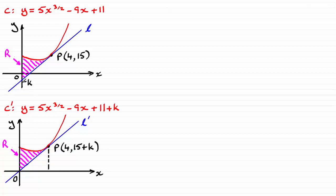To work out what k is I need to establish the equation of the line L — that tangent at P. So I'm going to get the gradient by differentiating the curve C. That will give me the gradient at any point. Then I can substitute x equals 4 into dy/dx to get that gradient. Then I can get the equation of the straight line L using the form y minus y1 equals m times x minus x1, where y1 is 15 and x1 is the x-coordinate of P. We'll find out where it crosses the y-axis, get our value of k, then integrate the curve between 0 and 4 and subtract the area of the triangle.